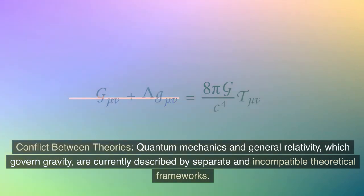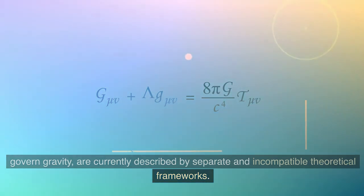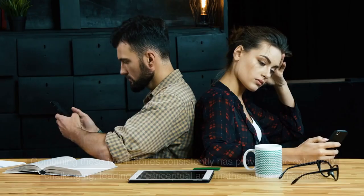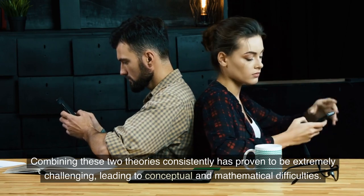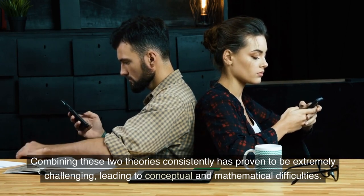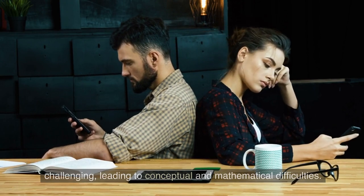Conflict between theories, quantum mechanics and general relativity, which govern gravity, are currently described by separate and incompatible theoretical frameworks. Combining these two theories consistently has proven to be extremely challenging, leading to conceptual and mathematical difficulties.